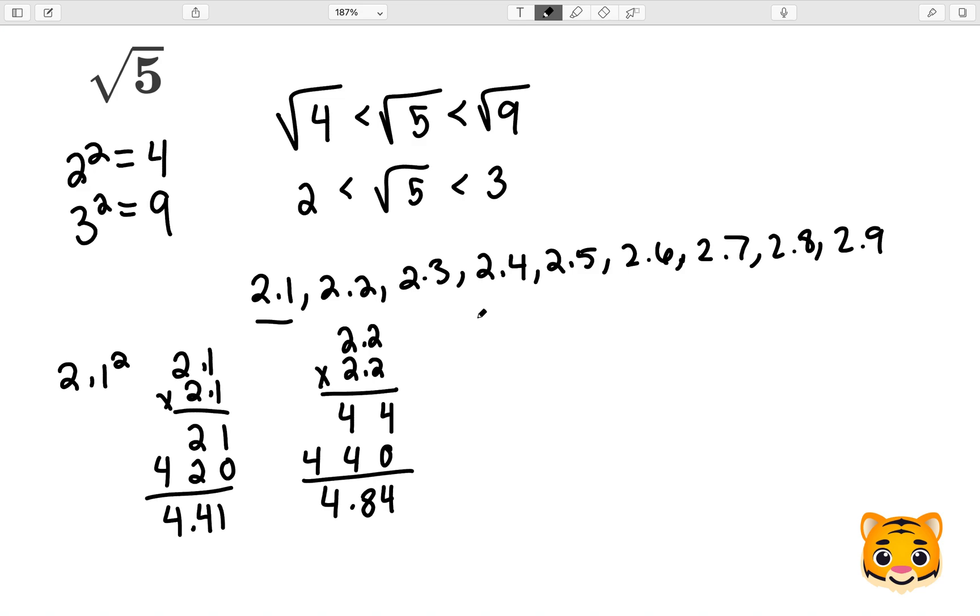So let's do 2.3 times 2.3. 3 times 3 is 9, 2 times 3 is 6, add our placeholder 0, 2 times 3 is 6, and 2 times 2 is 4. Now we can add these together, and we get 5.2629.